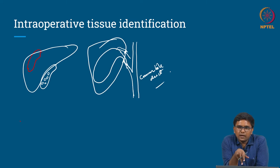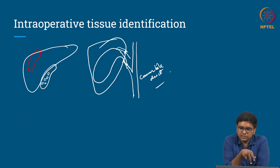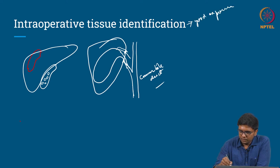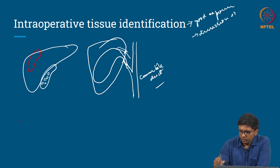Experienced surgeons would not have a big problem dealing with this, but this is especially useful for beginner surgeons. Correct intraoperative tissue identification requires good experience from the surgeon, dissection skills, and also sound anatomical knowledge.